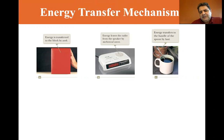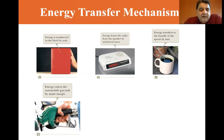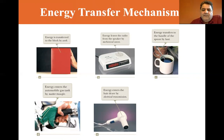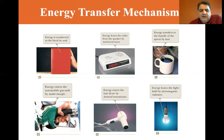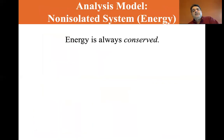When you put heat into a system, you've added Q. Energy enters an automobile gas tank by matter transfer (MT) — you're putting chemicals into the tank that will be combusted to make the car run. A hairdryer receives energy by electrical transmission, sending electrical energy into coils to generate heat. And energy leaves a light bulb by electromagnetic radiation — light is electromagnetic radiation. These are all the energy transfer mechanisms we'll discuss.